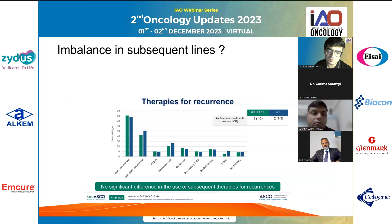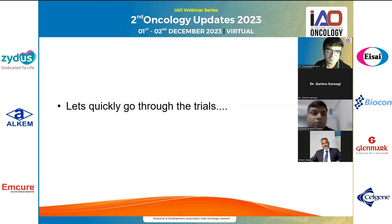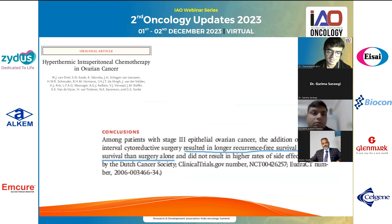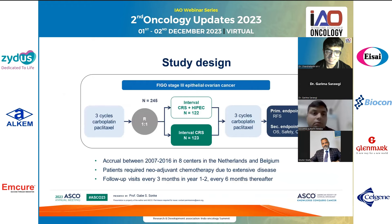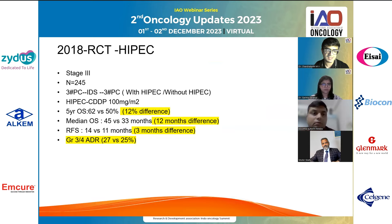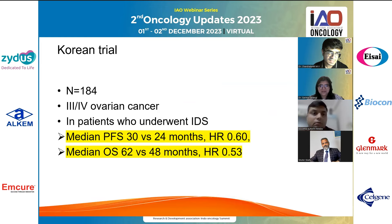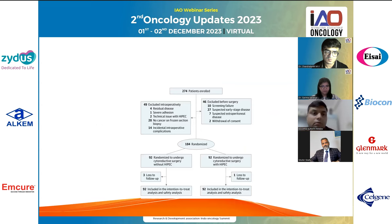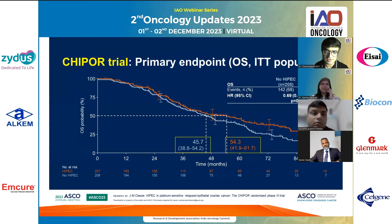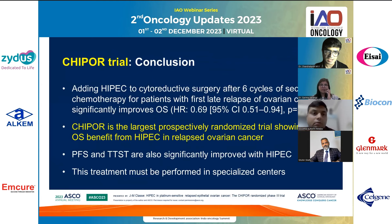The first trial in the first-line setting showed improved overall survival and recurrence-free survival. The study design involved three cycles of neoadjuvant chemotherapy, then CRS plus HIPEC, then three more cycles, assessing PFS and overall survival. The five-year overall survival difference is 12 percent, with a median overall survival difference of 12 months. The Korean trial also shows an improvement in overall survival with a hazard ratio of 0.53. In recurrent platinum-sensitive ovarian cancer, endpoints including overall survival, progression-free survival, and time to subsequent treatment are all better.